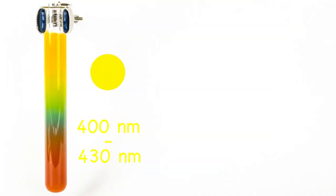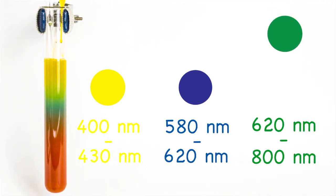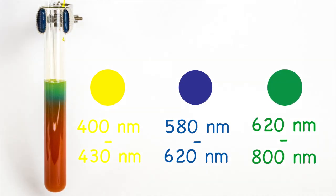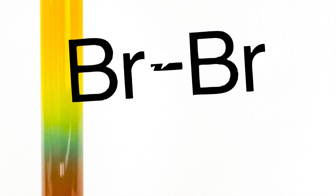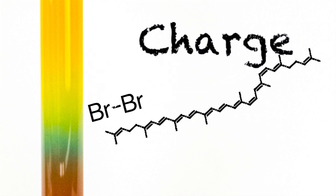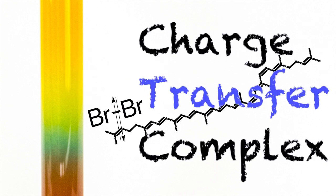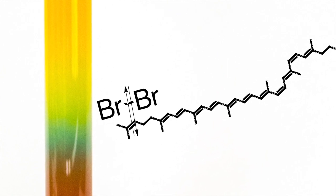This explains why we see yellow, but not why we see blue and green. These intriguing blue and green layers are from a stage just before bromine adds to lycopene, called the charge transfer complex, which allows the exchange of charges between the bromine and the double bond.